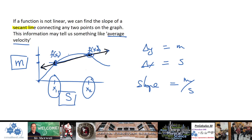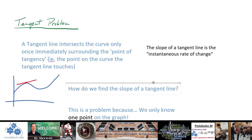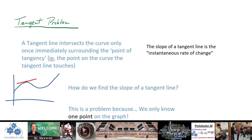Secant lines have different meanings depending on context. If this was the motion of a particle - say a person or car - that traveled a certain distance in meters over time in seconds, then the slope of that line would be rise meters over run seconds, giving you average velocity. So the slope of this line could represent average velocity or average rate of change over time.